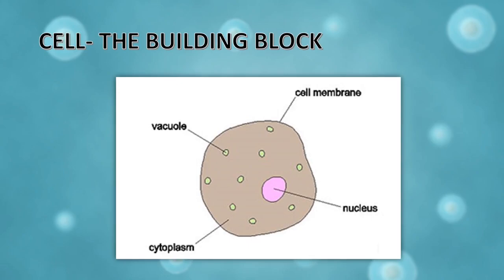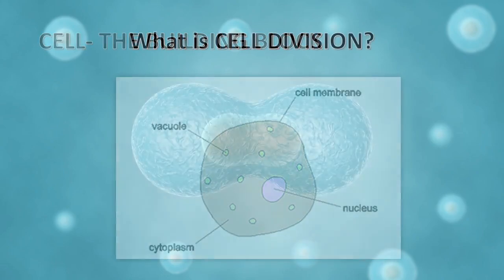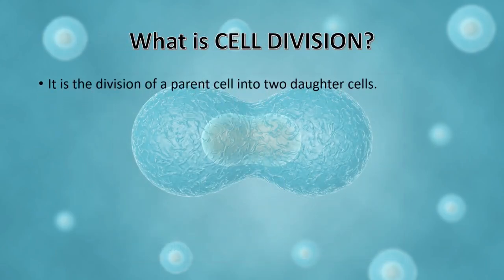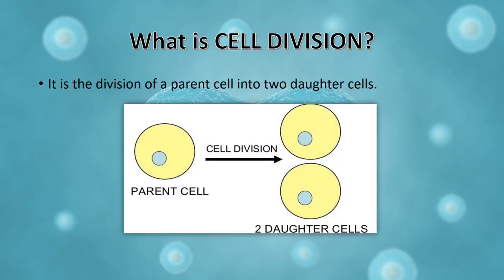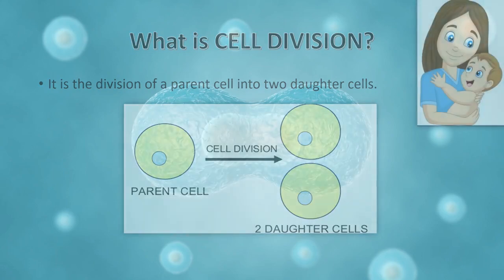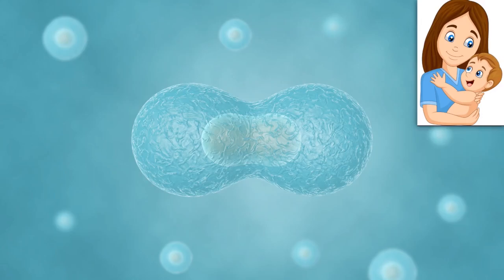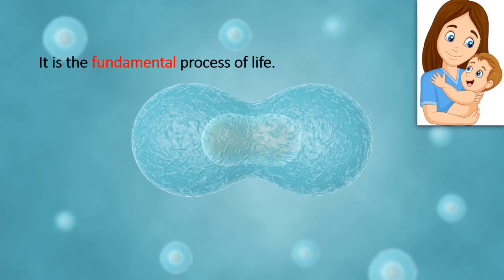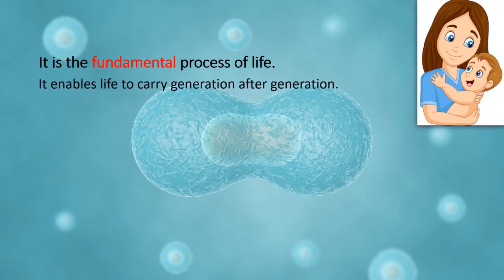Now let's move on to cell division. Cell division is the division of a parent cell into two daughter cells. That means if I have one primary cell and it has to undergo division, it is going to divide into two daughter cells — that process is known as cell division. It is the fundamental process of life, meaning all basic processes of life begin from the cell.